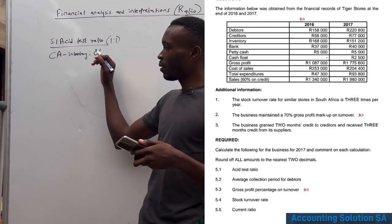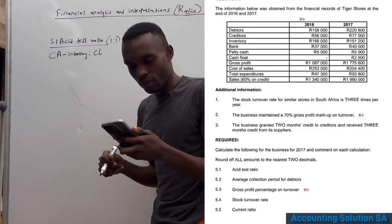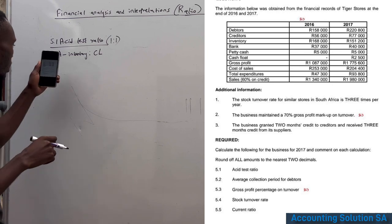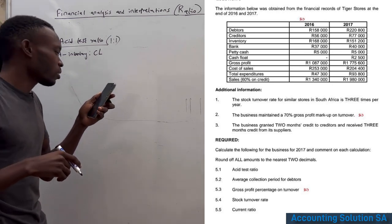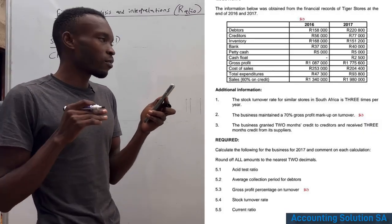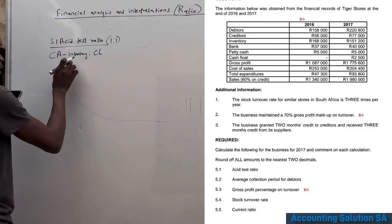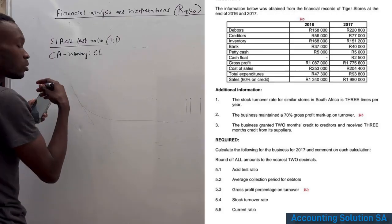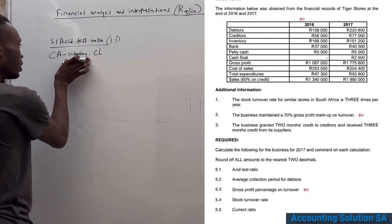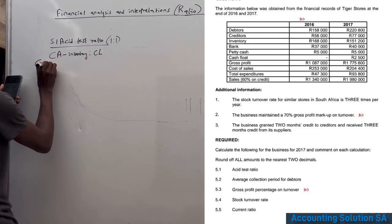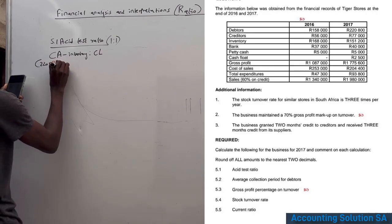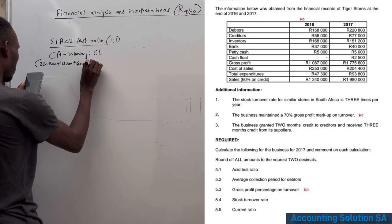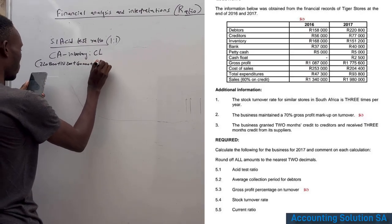Now let's do the calculation. From the table, current assets include: inventory 151,200; bank; petty cash; and cash float. We add 220,800 + 151,200 + 40,000 + 5,000 + 2,500.